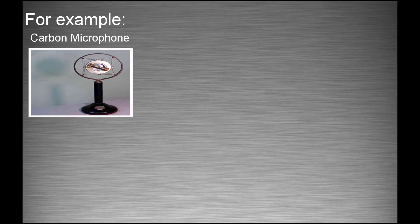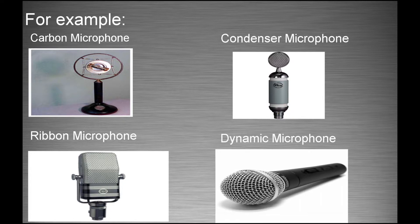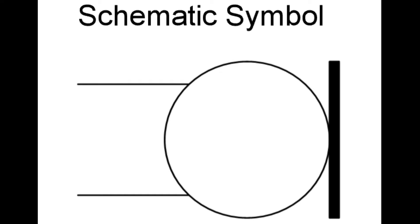There are many types of microphones. For example, carbon microphone, condenser microphone, ribbon microphone, dynamic microphone and many others. The schematic symbol for a microphone looks like this.